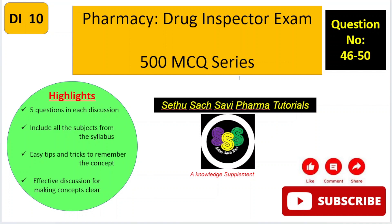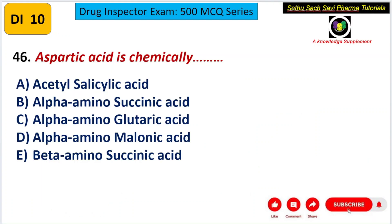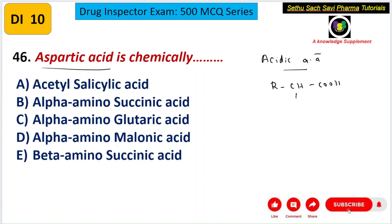The first question: aspartic acid is chemically — A) acetylsalicylic acid, B) alpha amino succinic acid, C) alpha amino glutaric acid, D) alpha amino malonic acid, E) beta amino succinic acid. First, you need to know that aspartic acid is an amino acid — in fact, it is an acidic amino acid.